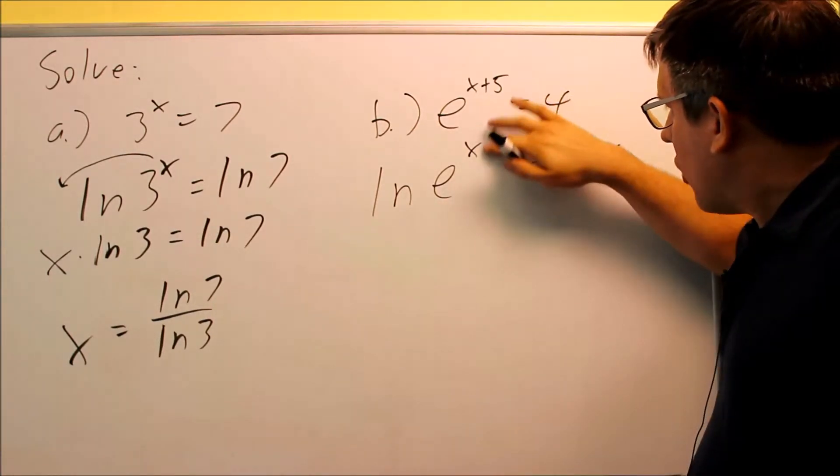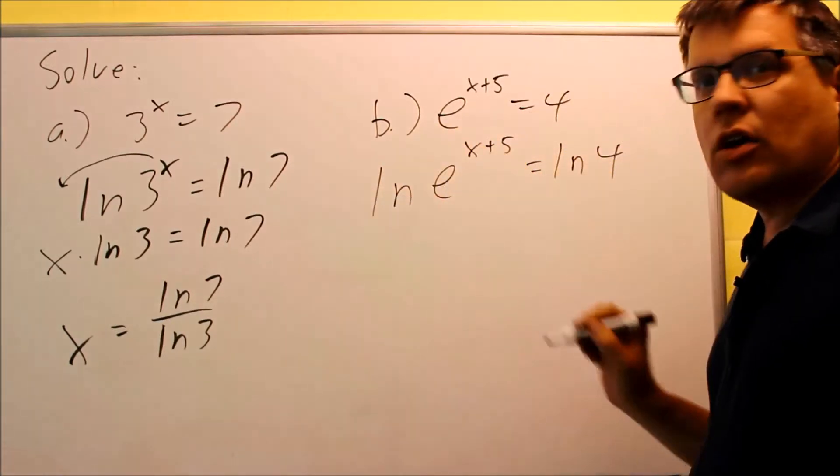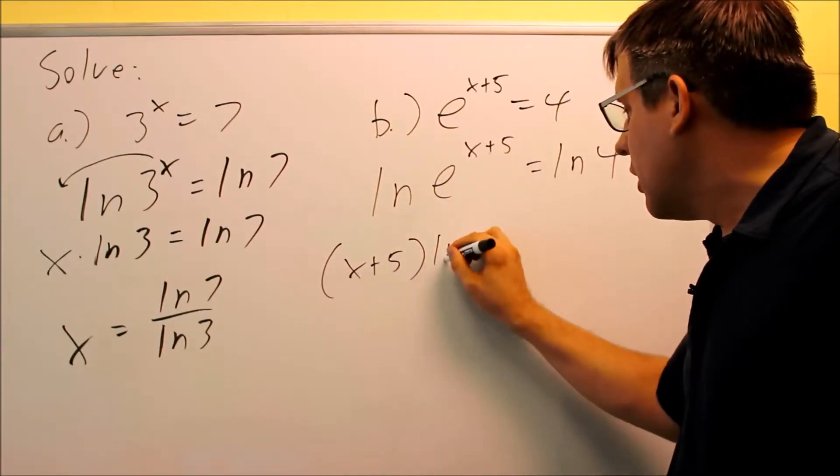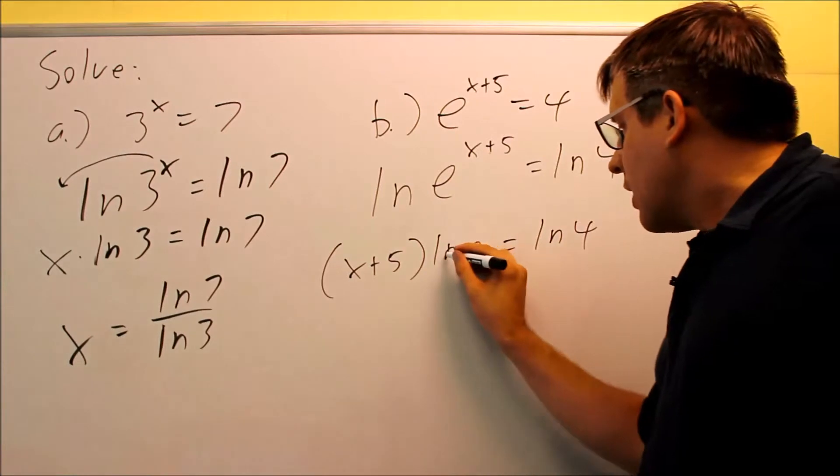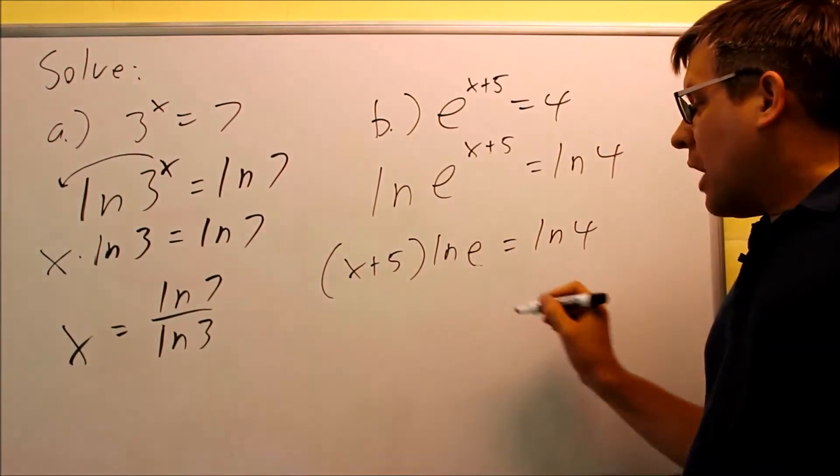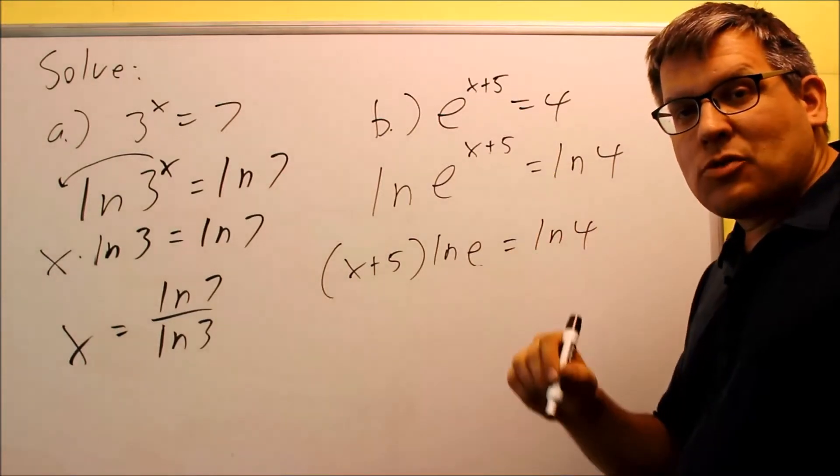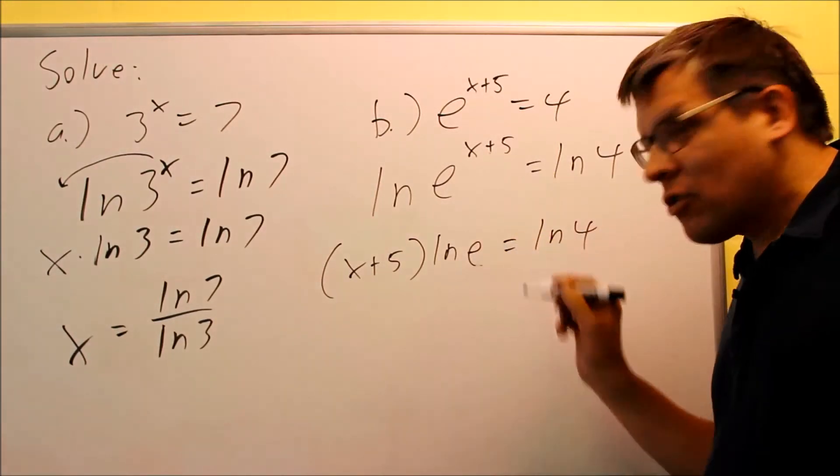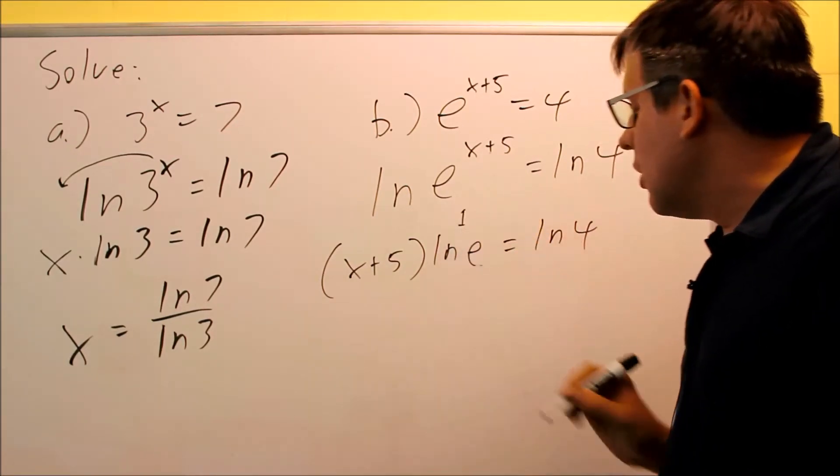This whole thing is one big exponent—this whole thing is going to come all the way down in front. So I can put x plus 5 down there and then I have ln e equals ln 4. Ln e was a property we talked about before. That's like a log base b of b that equals 1, because this is a log base e with an e afterwards. So this whole thing would turn into a 1.